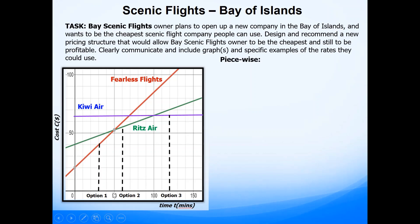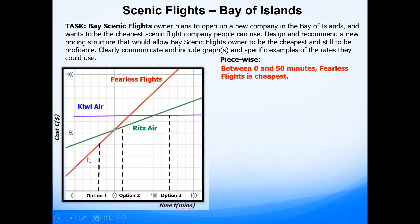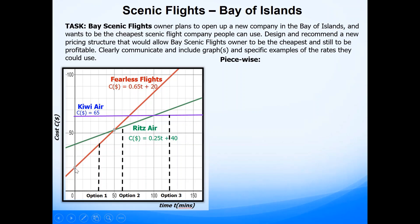We will be using the piecewise function. We already know from the previous video that between zero and 50 minutes, Fearless Flights is cheapest. When we create a new model that needs to be cheapest, it must be below the red line — it has to be less steep compared to the red line. I could have used a straight line from a y-intercept of 20 going all the way up, but that would make Bay Scenic Flight cheapest while losing a lot of money. Since the question says they still need to be profitable, we cannot use that option, so we use a piecewise model.